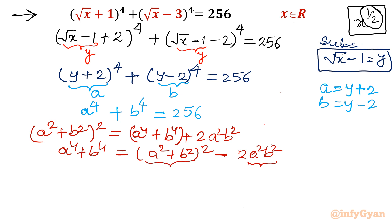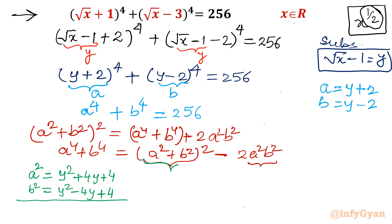Since a = y + 2, we get a² = y² + 4y + 4. And b² = y² - 4y + 4. Now two things are required. First, a² + b²: adding them, the 4y and -4y cancel, leaving a² + b² = 2(y² + 4). This is important — we will use it.